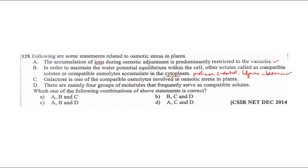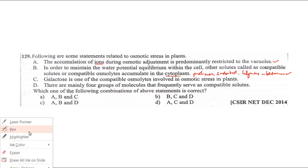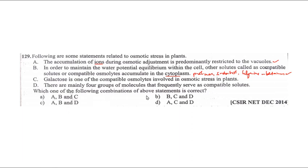Galactose is stated to be one of the compatible osmolites. There are mainly four groups of molecules that frequently serve as compatible solutes. However, galactose was not found to be acting as an osmolite. This statement is incorrect.